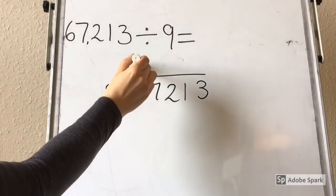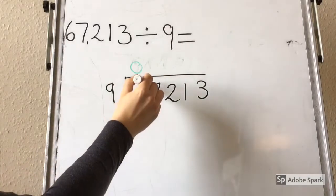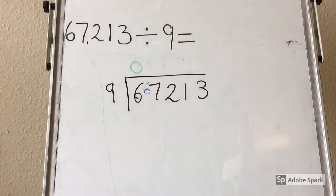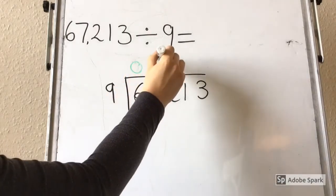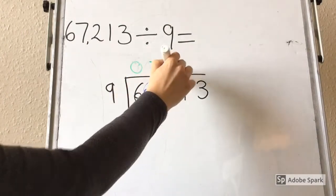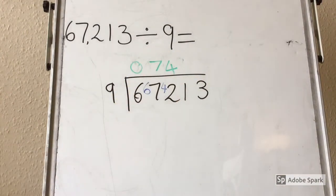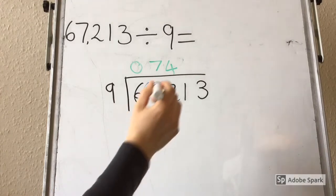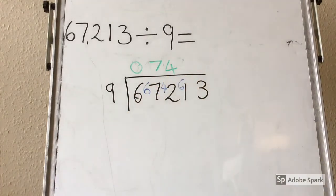9 doesn't go into 6, so I am going to put a 0 up here. I need to carry the 6 across and ask myself how many times 9 goes into 67. I know it goes into 63 seven times, so I am going to put a 7 on the top and there are 4 left over. So I am going to carry my 4 across to my 2. I know that 9 goes into 42 four times, because it goes into 36. But there will be 6 left over, so I need to carry the 6 across to the 1.